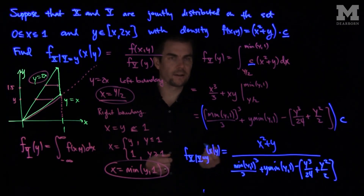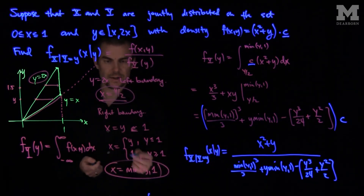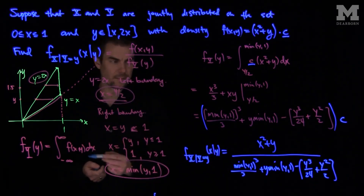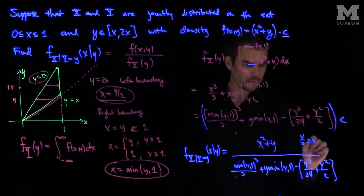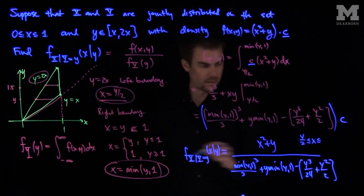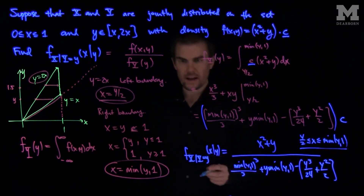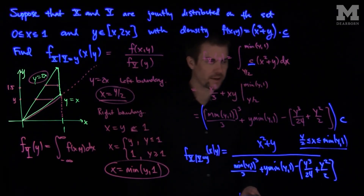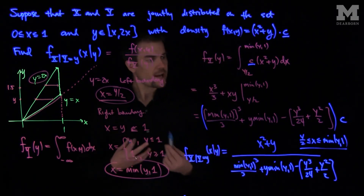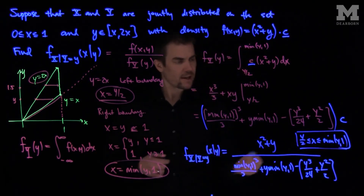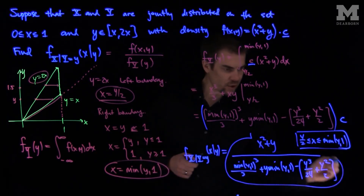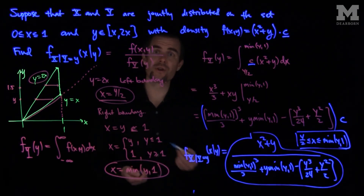This is valid in the region where x is between y over 2 and the minimum of y and 1. The range of y is between 0 and 2 — we pick our value of y first, and then based on that value we construct the range of x. This expression is our conditional distribution of x given that y equals y.